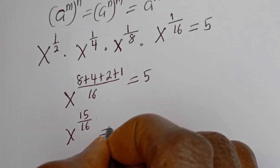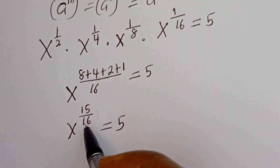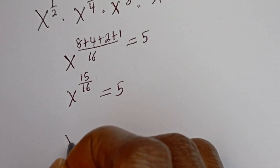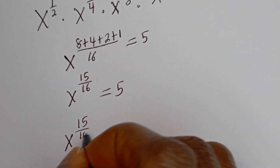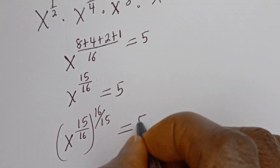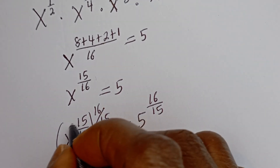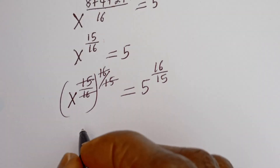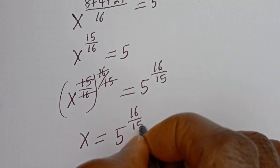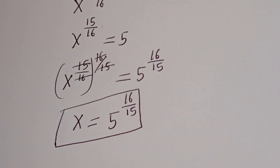That gives us x to the power of 8 plus 2 is 10, plus 4 is 14, plus 1 is 15 — so 15 over 16 — equals 5. To solve for x, we raise both sides to the power of 16 over 15. The exponent 15 over 16 times 16 over 15 cancels to 1, therefore x equals 5 to the power of 16 over 15, and this is the final answer.